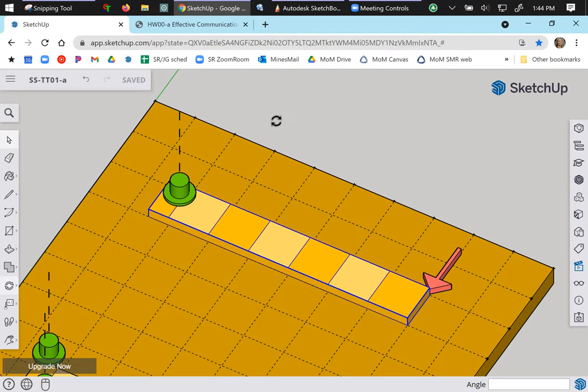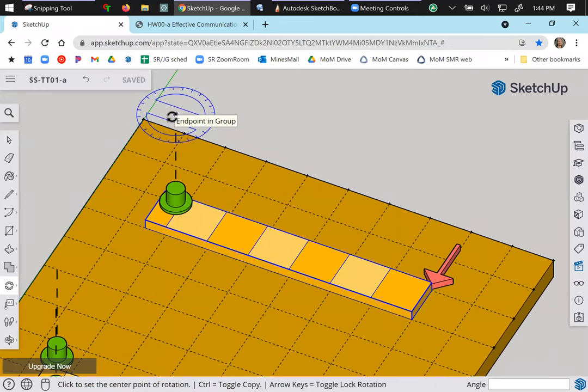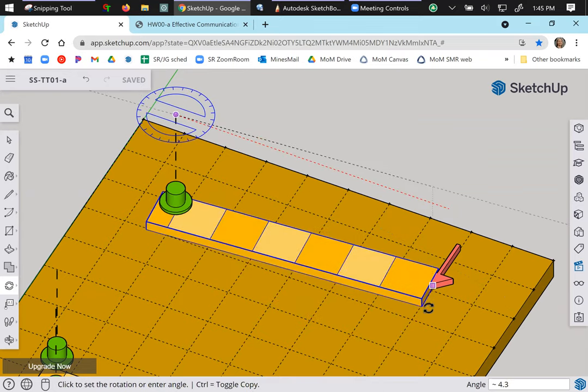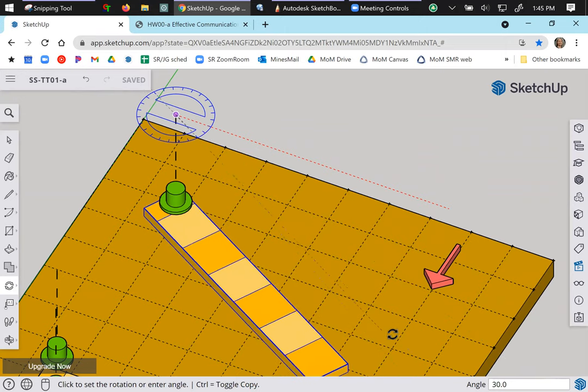And so hopefully what you're able to do is note that this system has no chance of staying in static equilibrium. It's going to be in motion. And it's going to rotate about that pin in this direction.